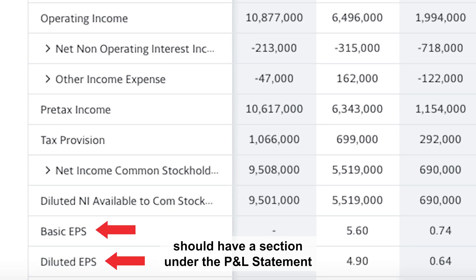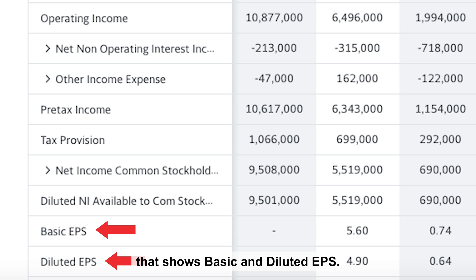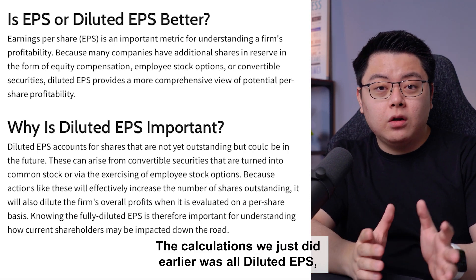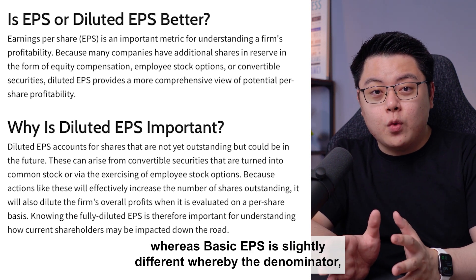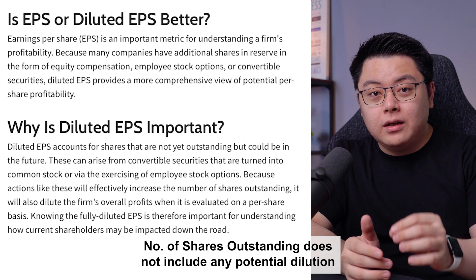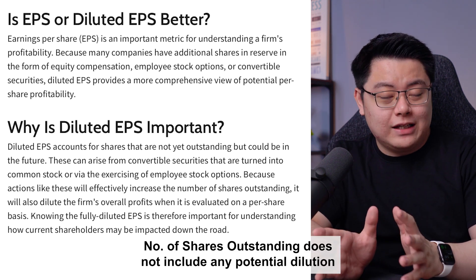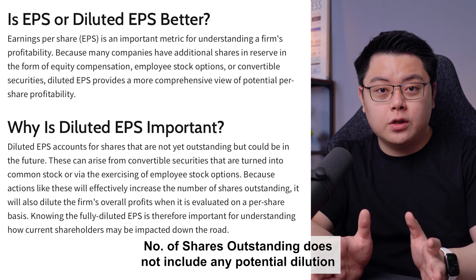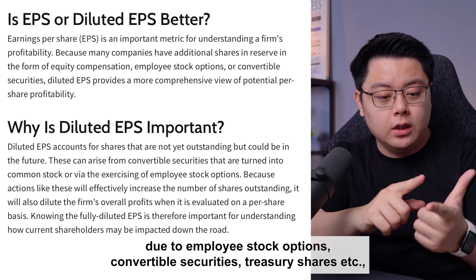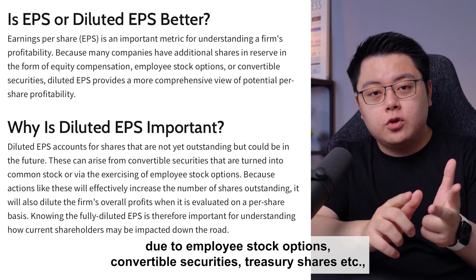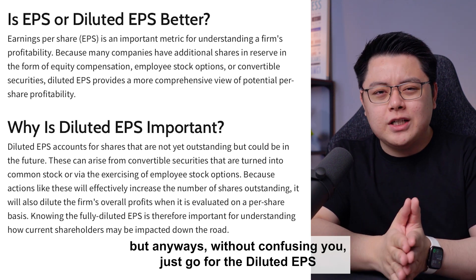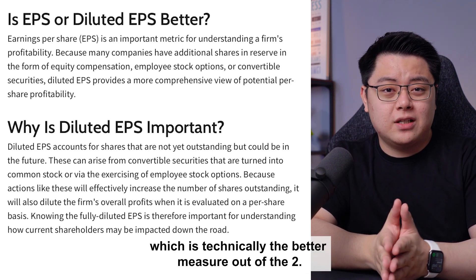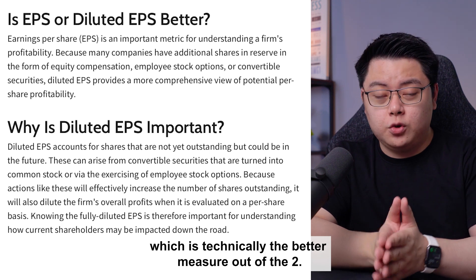They should have a section under the P&L statement that shows basic and diluted EPS. The calculations we just did was diluted EPS, whereas basic EPS is slightly different whereby the denominator — the number of shares outstanding — does not include any potential dilution due to employee stock options, convertible securities, treasury shares, etc. Just go for the diluted EPS, which is technically the better measure out of the two.